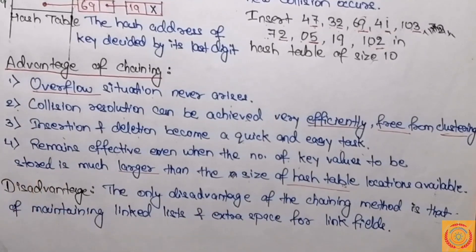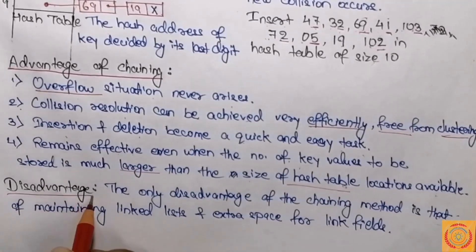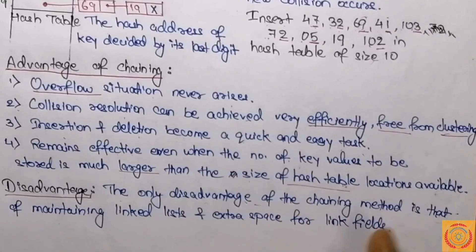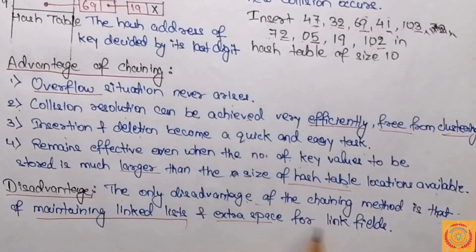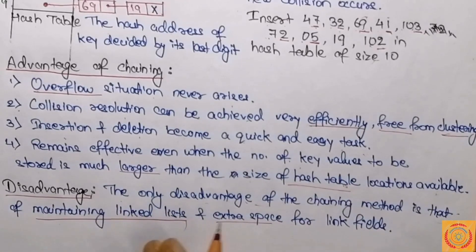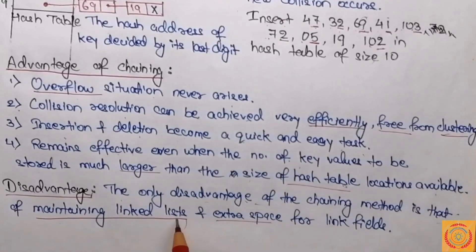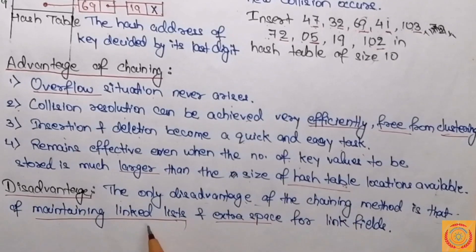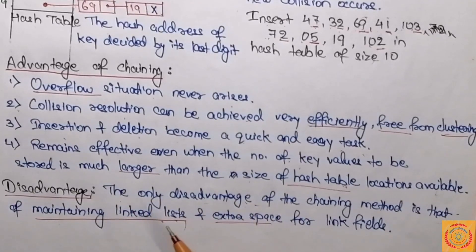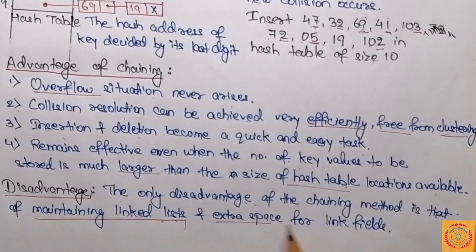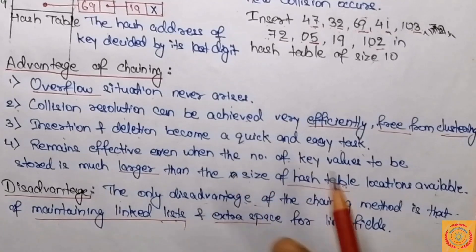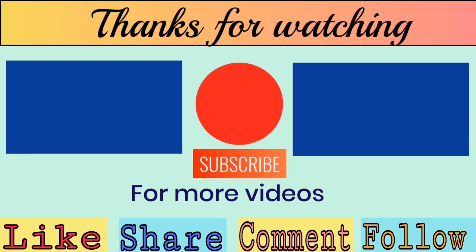The only disadvantage of the chaining method is maintaining linked lists and the extra space required for the link fields. In closed hashing we used arrays, which have only a data part with no link part. Here, extra space is required for the linked fields. This is all about the chaining method or the open hashing method. I hope you understood this topic well. If you have any doubts you can contact me, and if you liked this video please support our channel. Thank you.